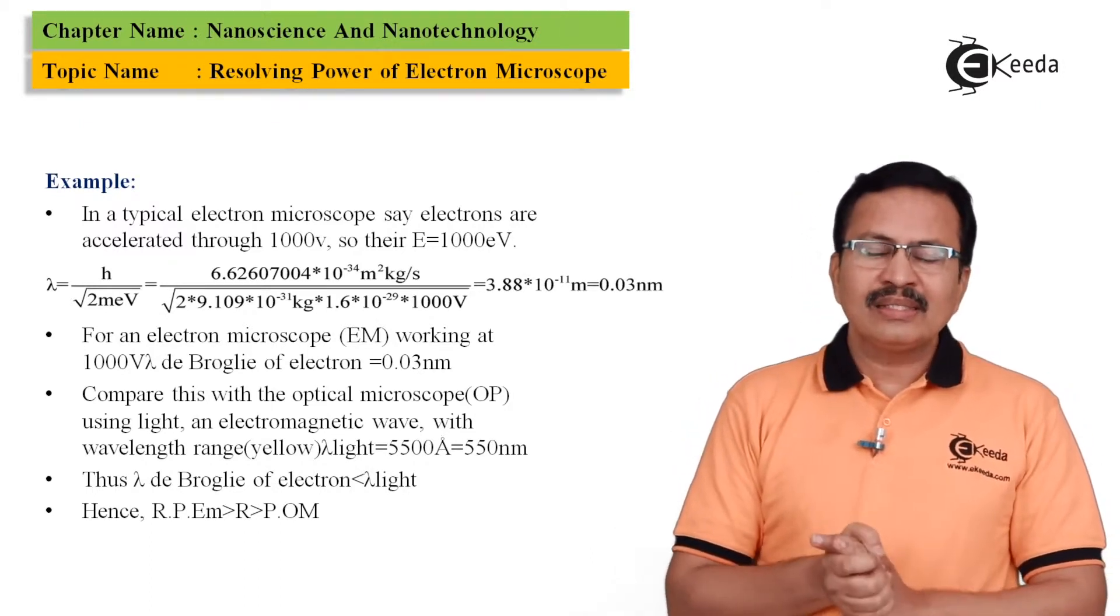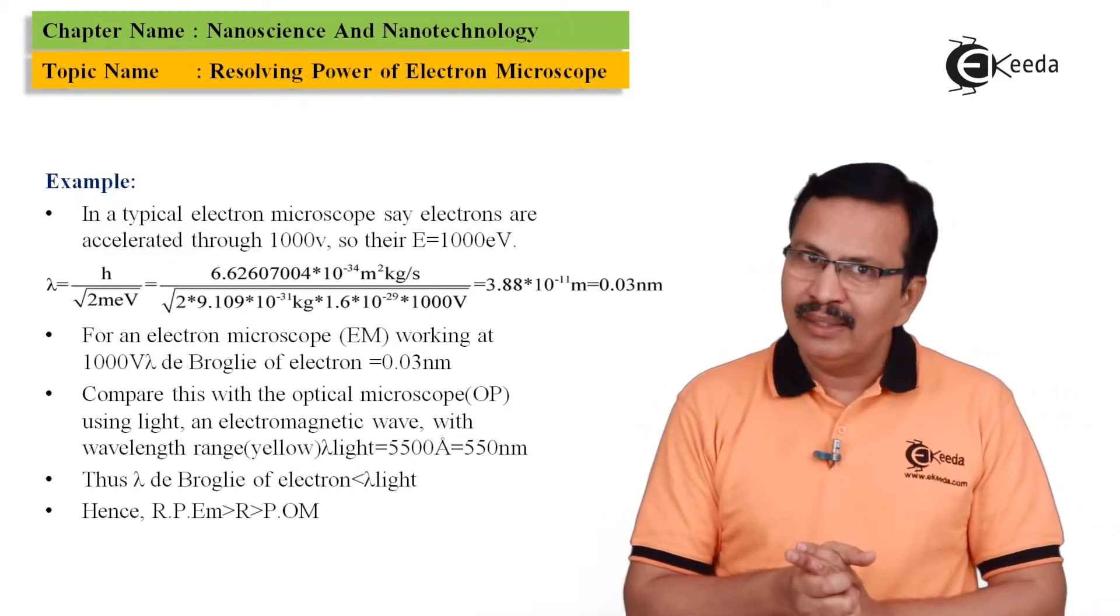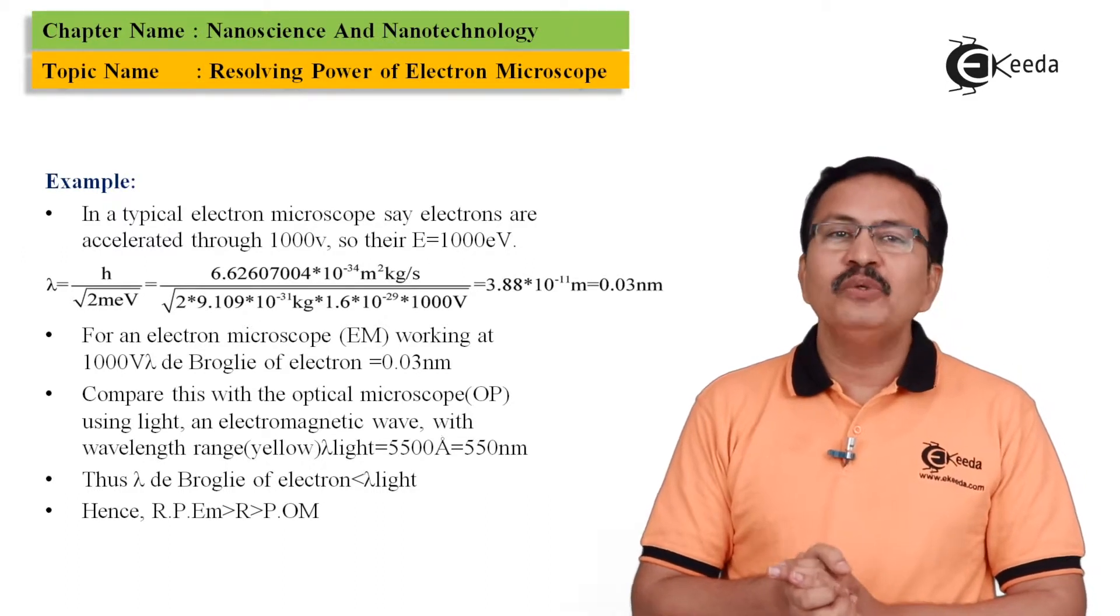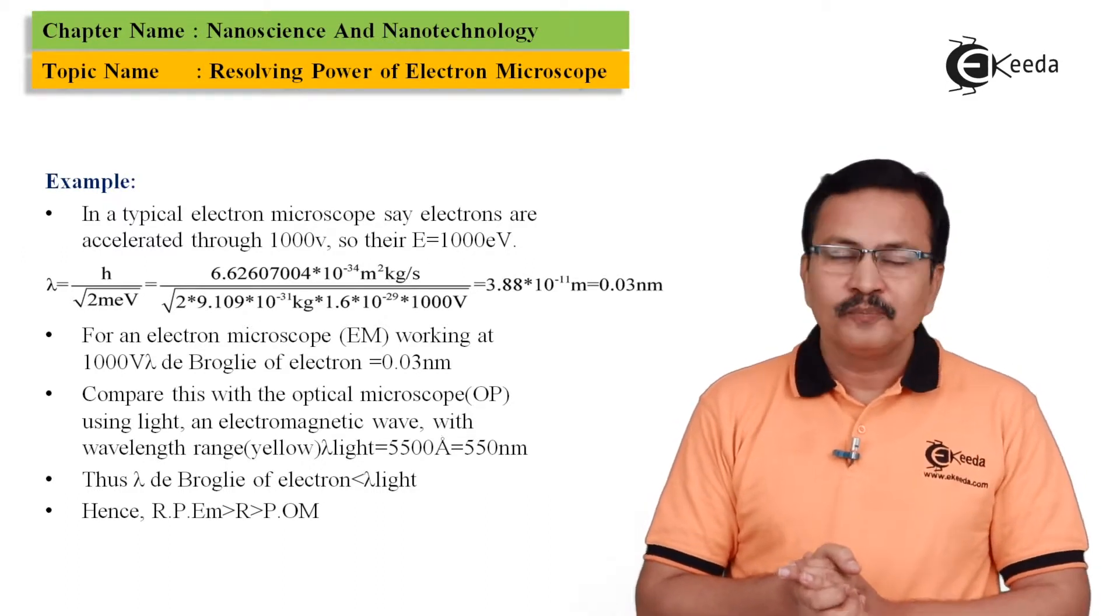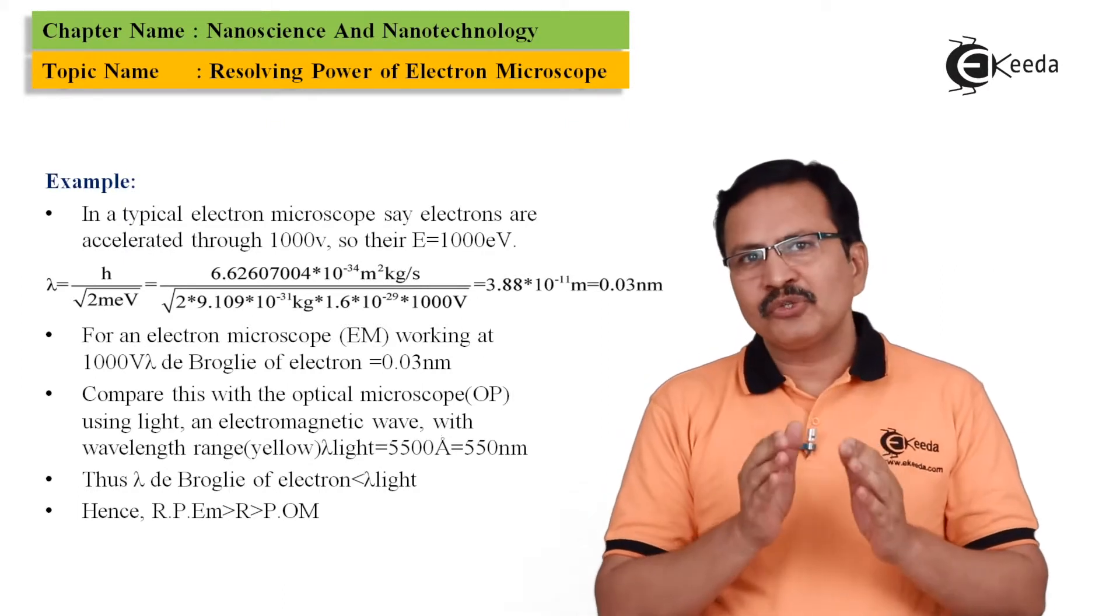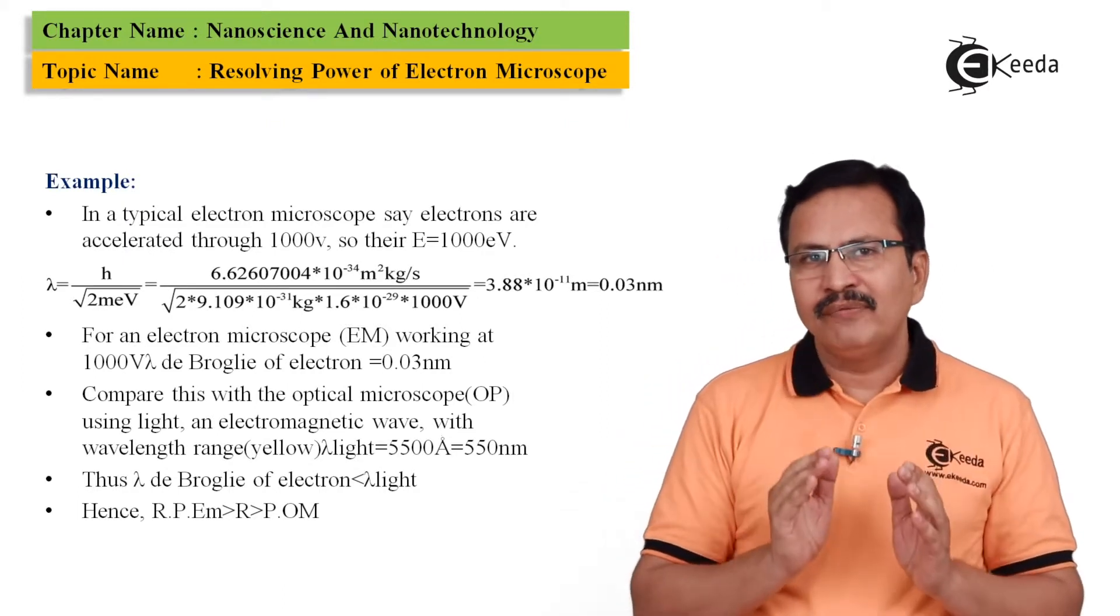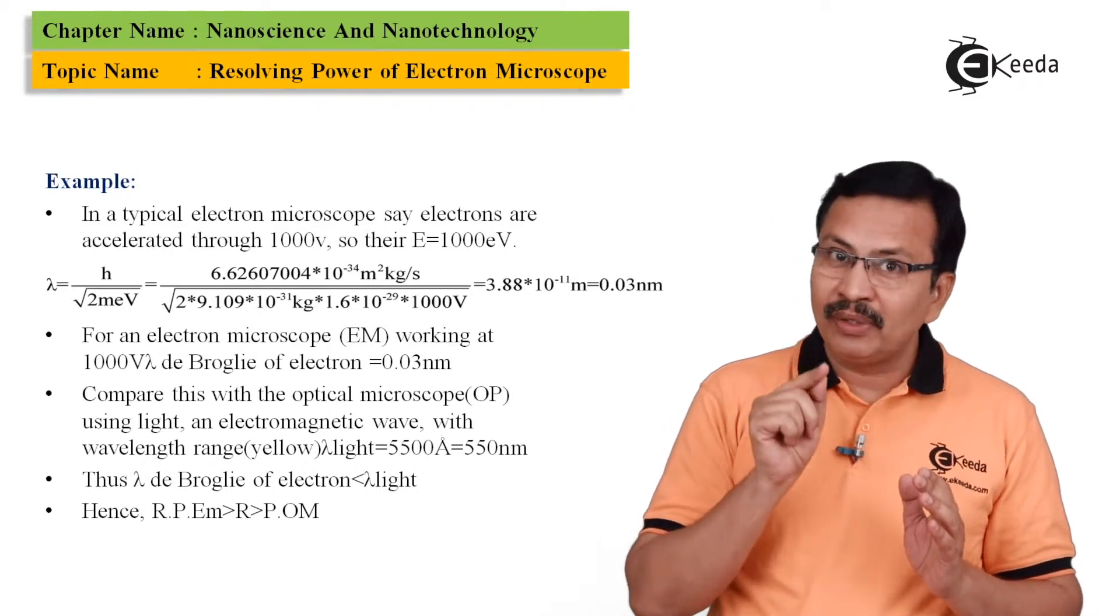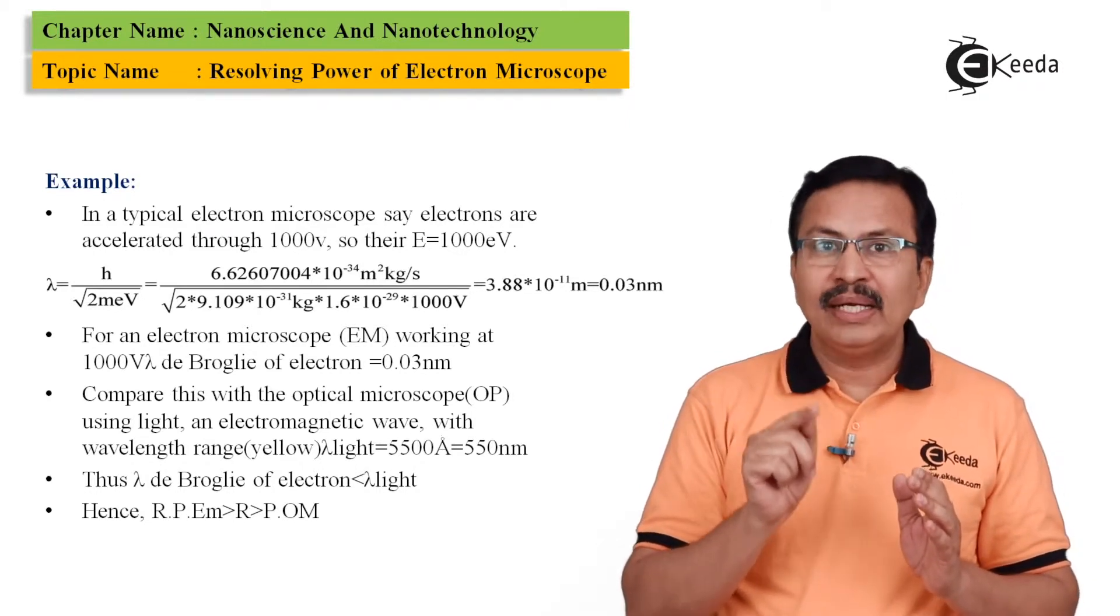Now let us substitute this in the formula, that is λ = h / √(2mE). So in the place of E, we have e, which is nothing but the electronic charge, multiplied by the voltage.